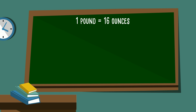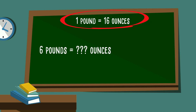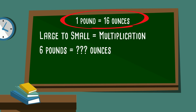Now: 6 pounds equals how many ounces? Our hint is one pound equals 16 ounces. We're moving from large to small, so we multiply. 6 times 16 equals 96, so 6 pounds equals 96 ounces.